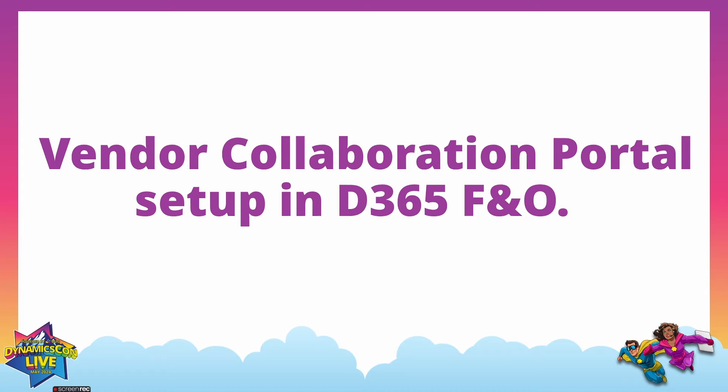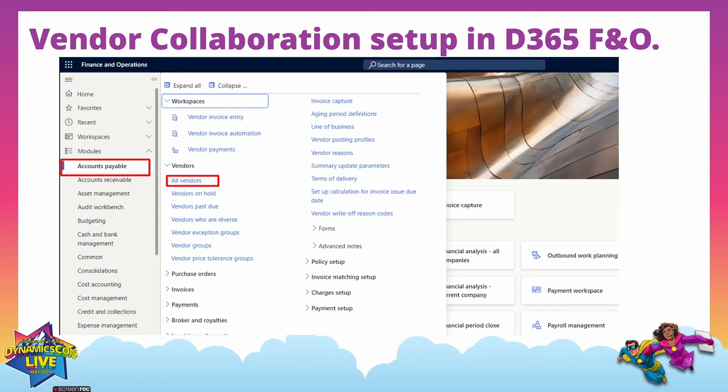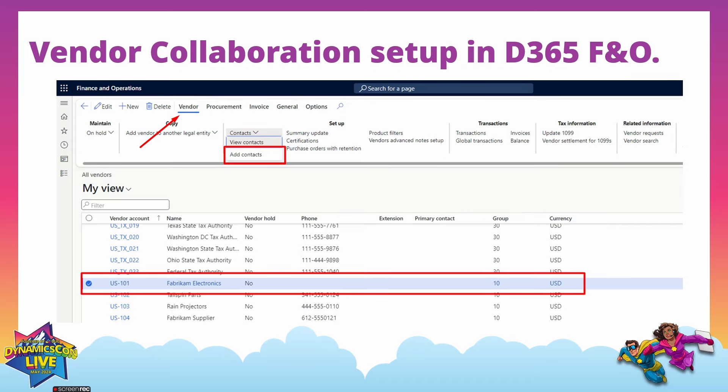Next we will move to the vendor collaboration portal setup in Dynamics Finance and Operations. Here we will cover two setups. First, we will provide access to one of our vendors for login to the vendor portal. Second, we will configure a setting at the vendor level for specific vendor actions in the portal. We will navigate to the Accounts Payable module and open the All Vendors section, choosing vendor Fabric and Electronics for this session.